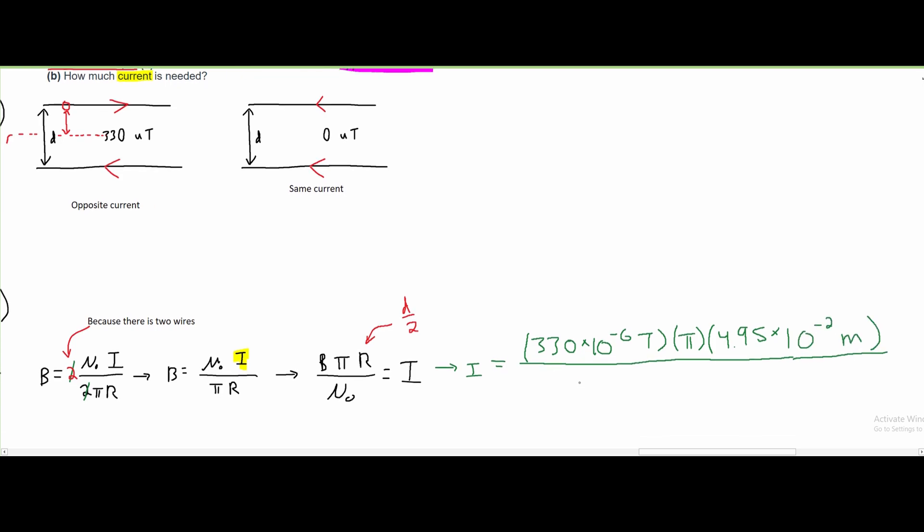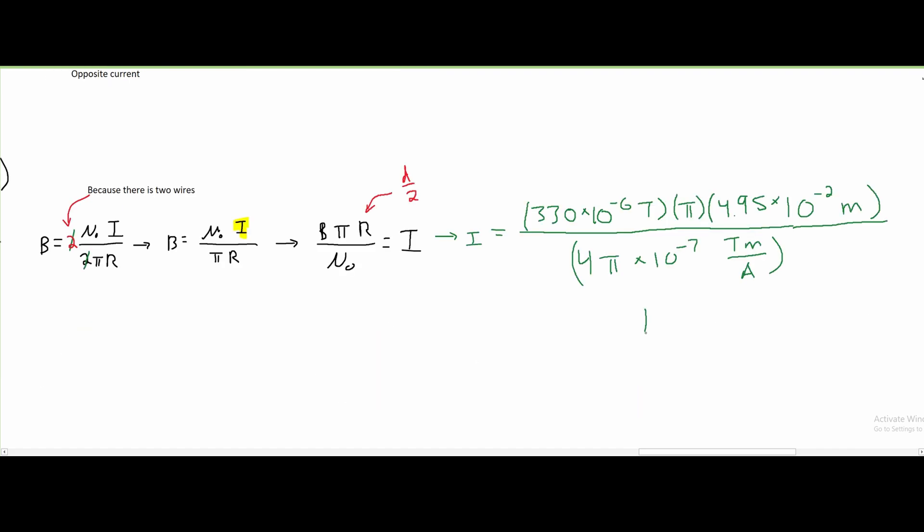This is all going to be over our constant μ₀, which is 4π times 10 to the negative 7 tesla meters per amp. This will give us an I that is approximately 41 amps, and that is the answer for number 3.